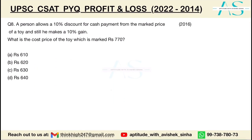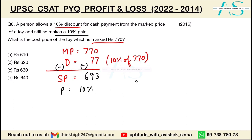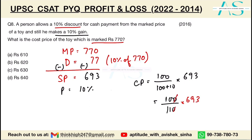A person allows a 10% discount on a marked price of ₹770. Discount = 10% of 770 = ₹77. Selling price = 770 − 77 = ₹693. He makes a 10% gain, so cost price = 100/(100+10) × 693 = 100/110 × 693 = ₹630.